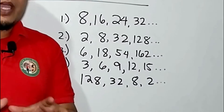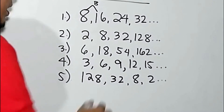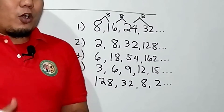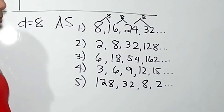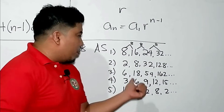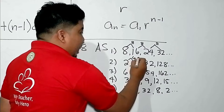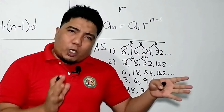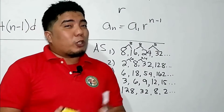The first sequence — 8, 16, 24, 32 — is an arithmetic sequence, and the common difference is positive 8 (positive because it is increasing). Now let's go to question number 2: 2, 8, 32, 128. The difference between 2 and 8 is 6, and the difference between 8 and 32 is 24. Since the differences are not equal, we will never have a common difference. Therefore, we move on to the next operation to consider.